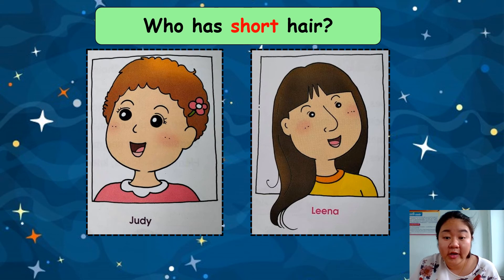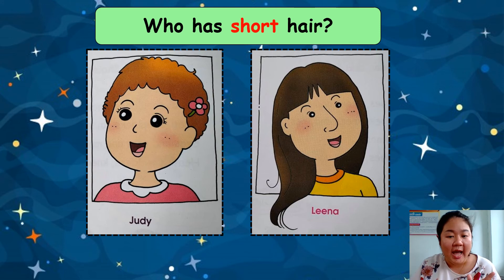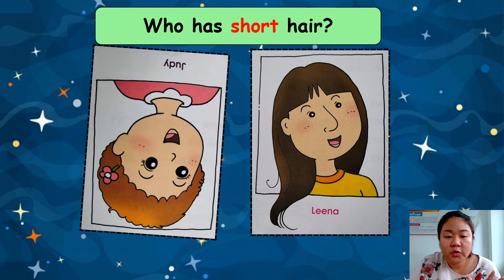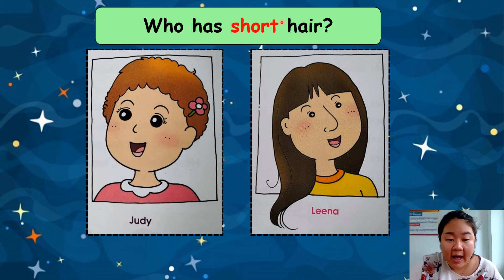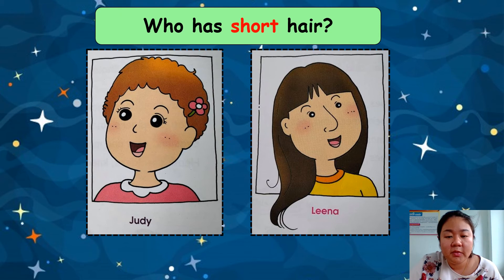Who has short hair? We just asked about long hair; now this question asks about short hair. The answer must be Judy, because Judy has short hair. ใครมีผมสั้น (who has short hair)? Judy has short hair, so the answer is Judy.